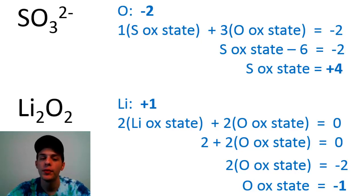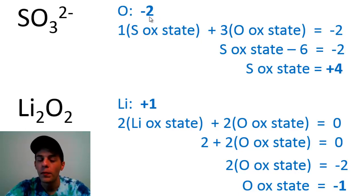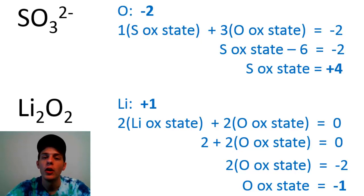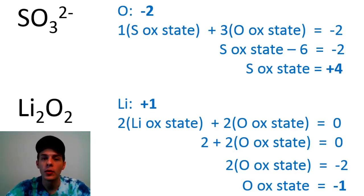An element can have different oxidation states depending on which other elements it's bonded to. For instance, in the sulfite ion oxygen had an oxidation state of −2, but in lithium peroxide it was −1. It really depends on which other atoms are in the molecule or polyatomic ion. In the next video we'll use our knowledge of oxidation states to actually track the progress of redox reactions and identify which atoms are being oxidized and which are being reduced. Hope you found this helpful — stay tuned!